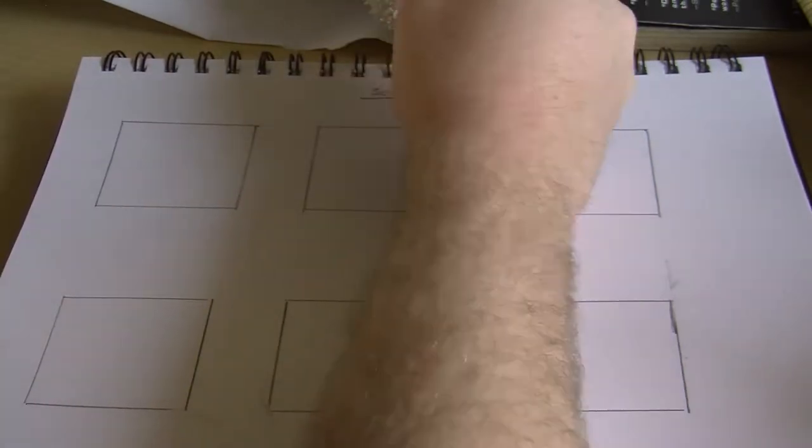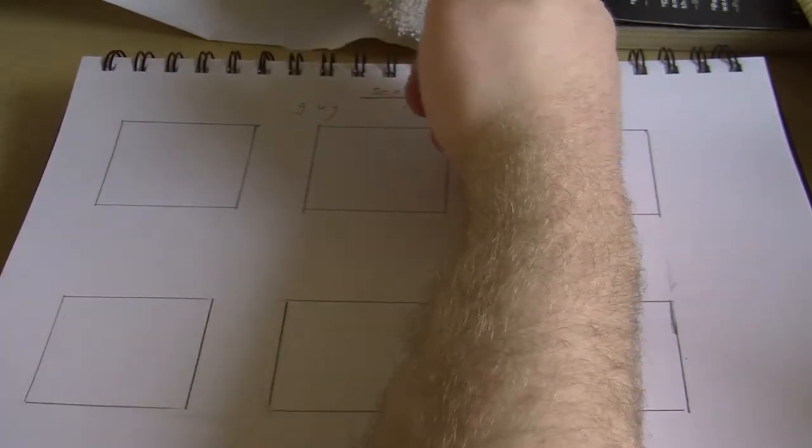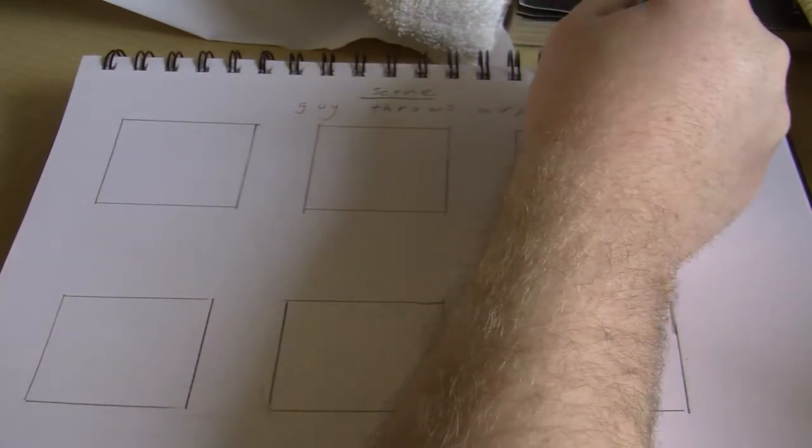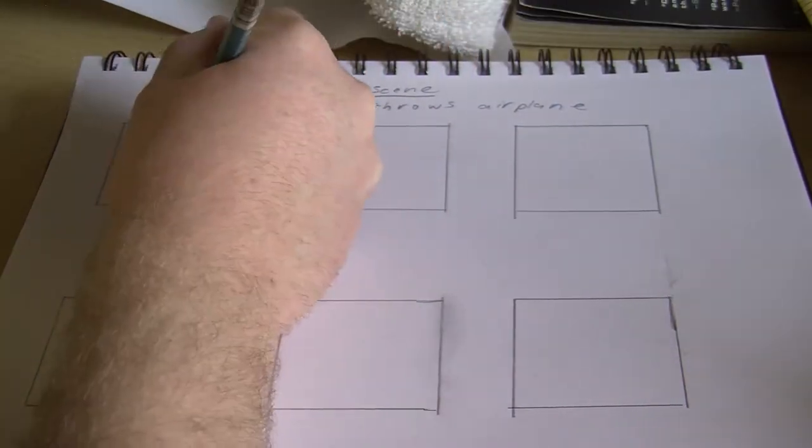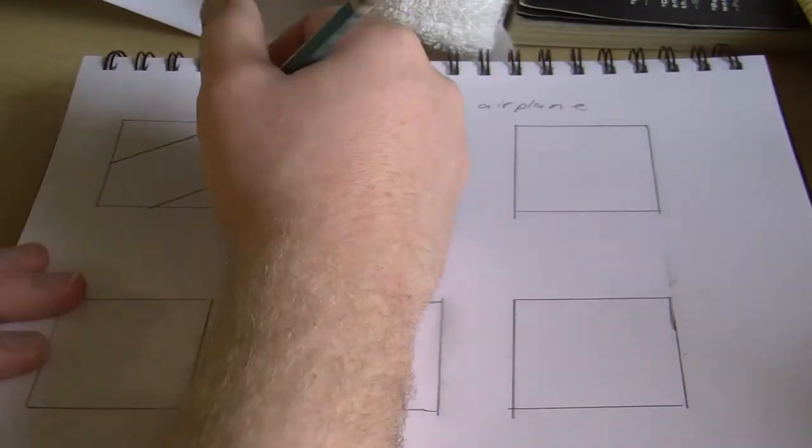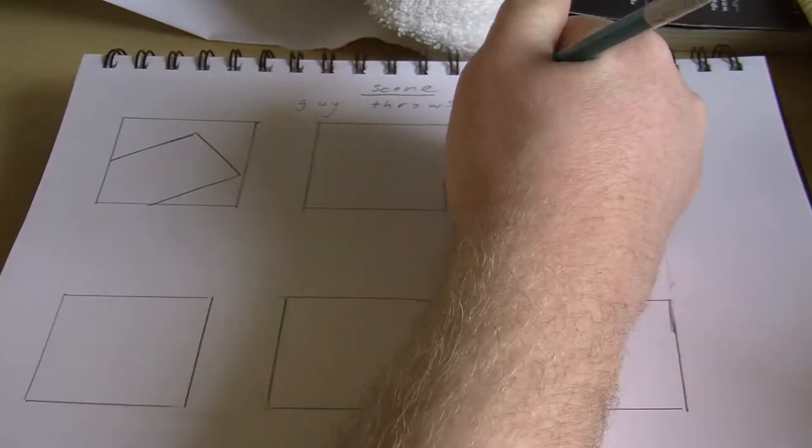Alright, so storyboarding. The first thing you want to do is get your storyboard sheet of paper, which normally you would print out, but since my printer doesn't work I just decided I would draw six boxes on a piece of paper and that's what we're going to use.